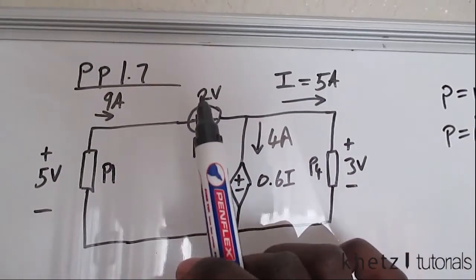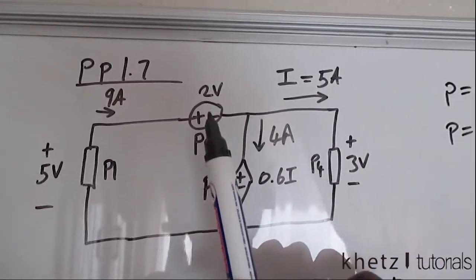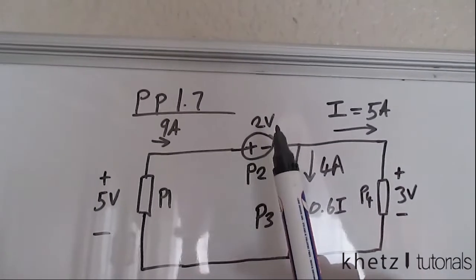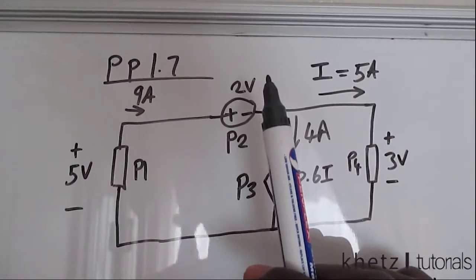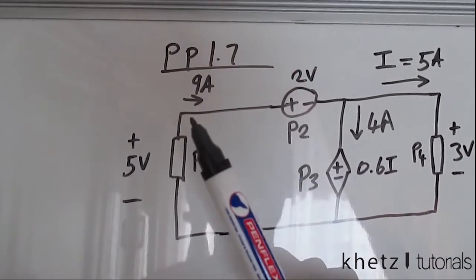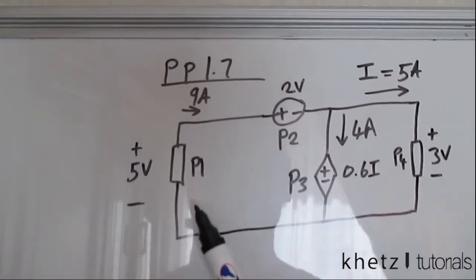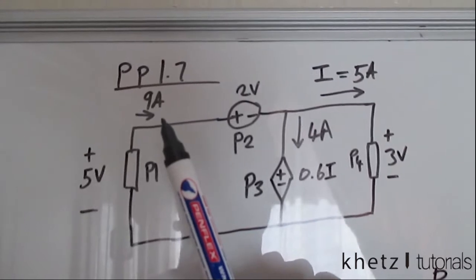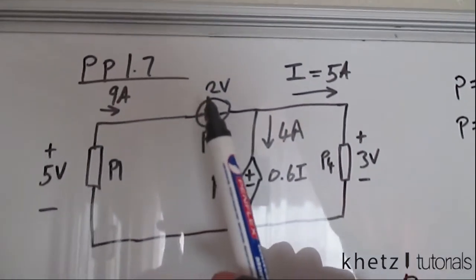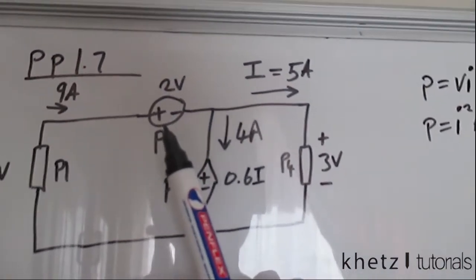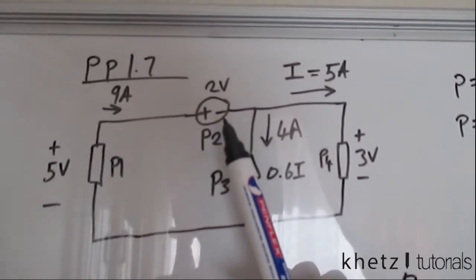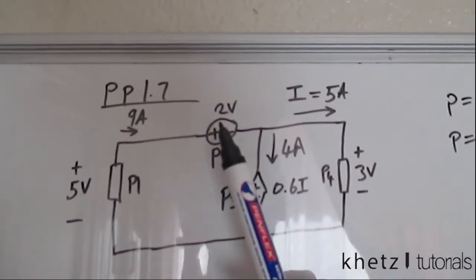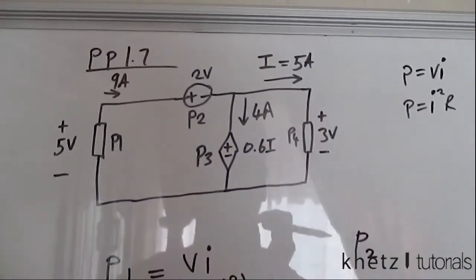We have the voltage source. We have its value, which is 2 volts. And we also have the same current, which is going through P1, which is 9. In this case, the current encounters the positive side first. So no negative signs will be introduced when calculating P2.